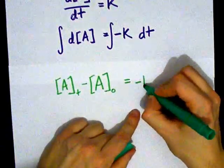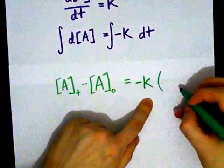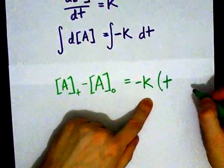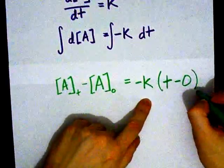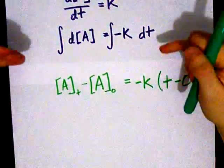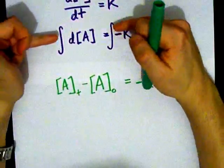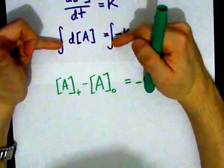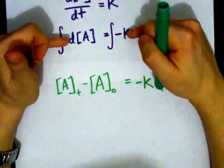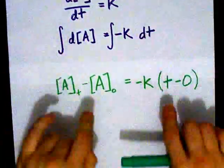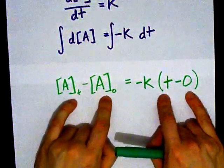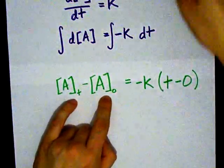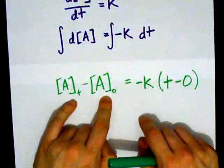On this side, negative k is a constant, and I have whatever time I've done it at, and 0. Now, this is not always how it works. You have to do some kind of integration, and the more complicated the function that you're integrating, the more complicated these turn into be. Check out my videos about first and second order reactions to see how that happens.